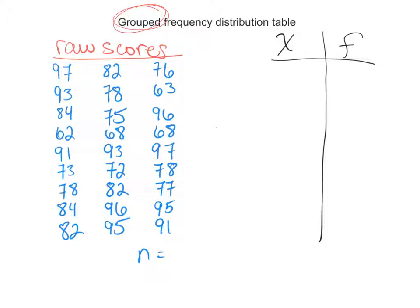The first thing we need to do is figure out how big our groups are going to be. Over here, we have our raw scores, and each one of these scores in blue represents one score. This might be Michael's score of 97 and Jacob's score of 93. Each person has their own individual raw score or their X.